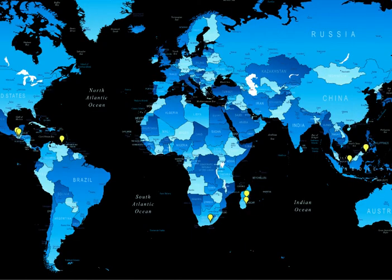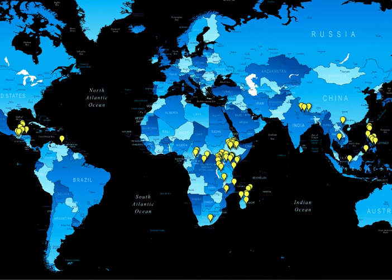The PHE approach has been tested by environmental and health organizations in diverse locations across multiple continents. The dots on this map mark PHE projects conducted over the last several years. These projects have proven effective for improving the lives of people in a variety of ways.